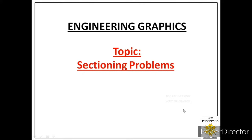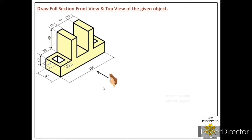Welcome students. Today we will solve the first problem on sectioning. We are given one object and we are asked to draw its full section front view and its top view. This is the front side of the object. In first angle of projection, we assume the vertical plane behind the object and horizontal plane below the object. Dimensions moving left to right are length, moving away are width, and moving toward the observer are height dimensions.